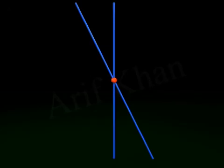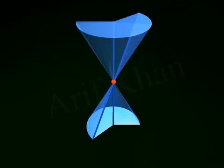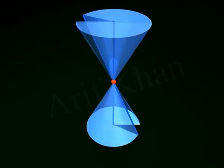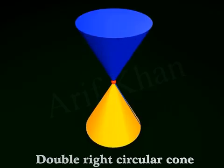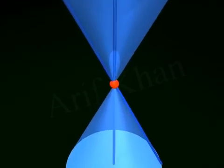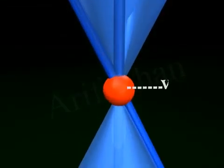When a straight line intersects a vertical line at a fixed point and rotates about that fixed point, the surface obtained is called a double right circular cone. A double right circular cone consists of two cones joined at a fixed point called the vertex.